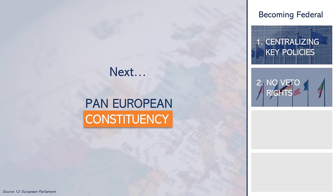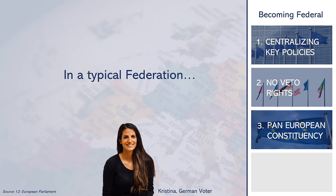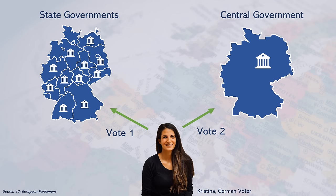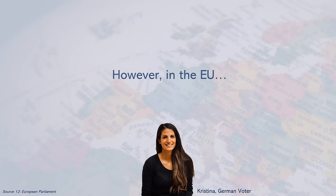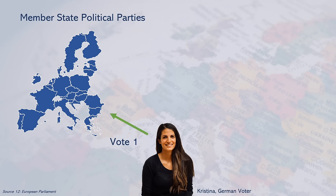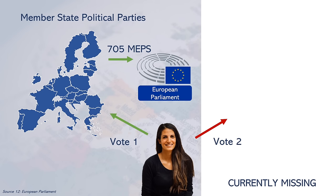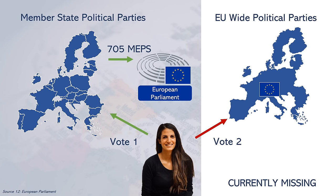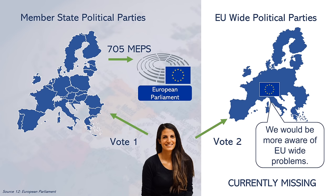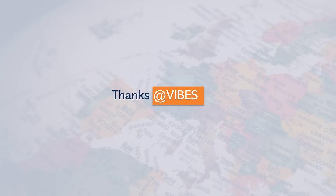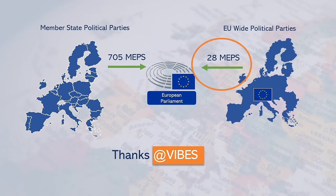Next, there is the need for a pan-European constituency. In a typical federation, you get multiple votes — one on a local level and another on a national level. Currently in the EU, citizens get one vote each, which goes to a national party, who then form an alliance with other member state national parties to form the European Parliament. In a pan-European constituency, citizens would get a second vote for parties that campaign throughout the EU. These candidates would represent the EU rather than just their own member state. The first steps have already been made, as the European Parliament recently adopted a proposal to have 28 additional MEPs elected across Europe.